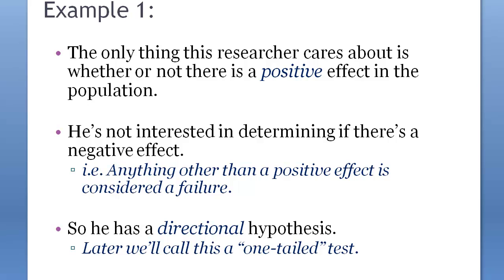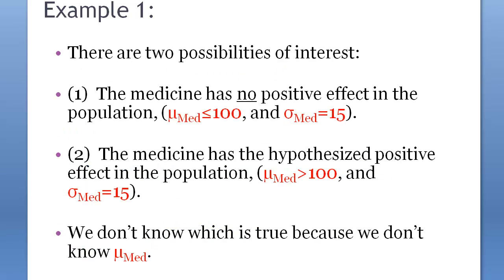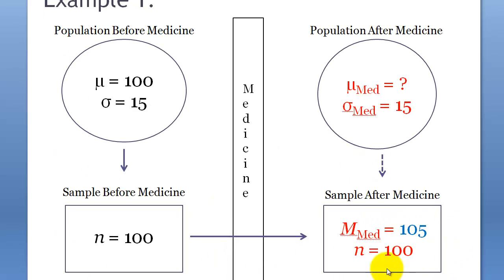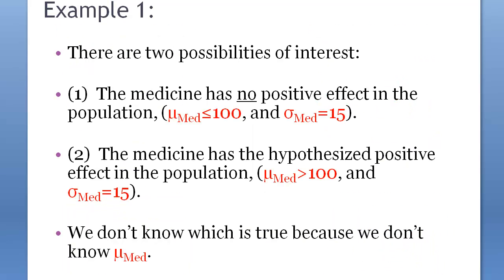This is actually called a one-tailed test. There are two possibilities of interest: the medicine has no positive effect in the population, or the medicine has a hypothesized positive effect. From this example, we can hypothesize two things: there was no effect and it was just error, or there was a real positive effect.